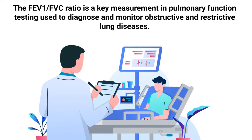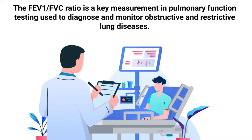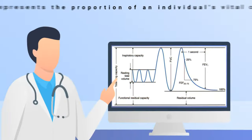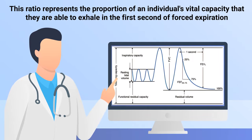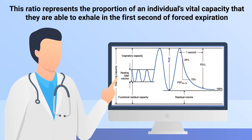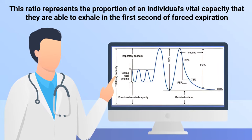The FEV1 to FVC ratio is a key measurement in pulmonary function testing used to diagnose and monitor obstructive and restrictive lung diseases. This ratio represents the proportion of an individual's vital capacity that they are able to exhale in the first second of forced expiration.